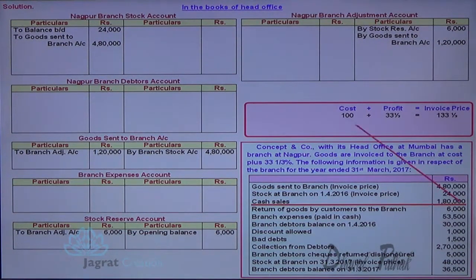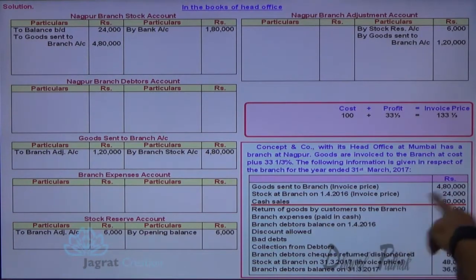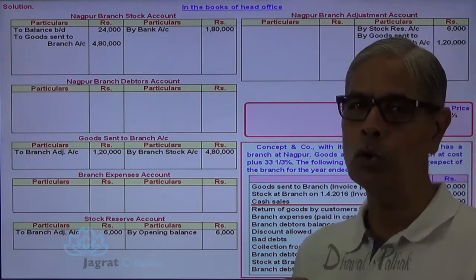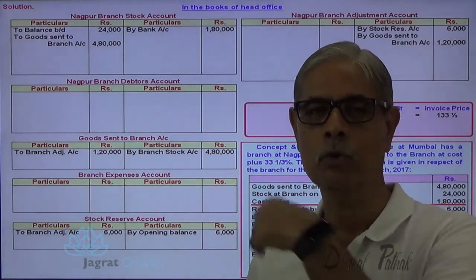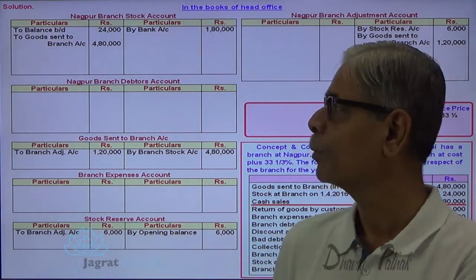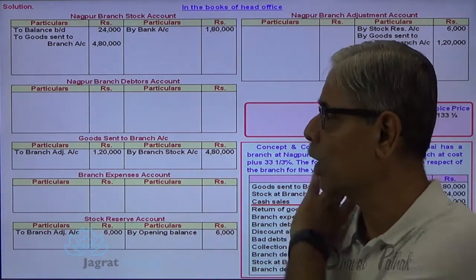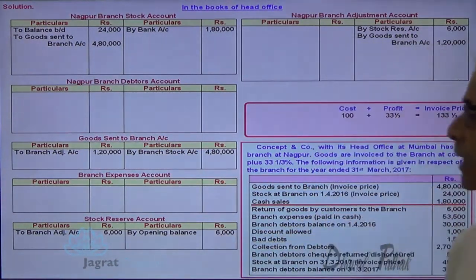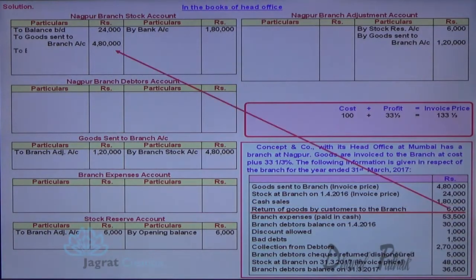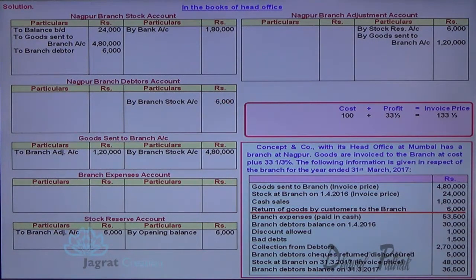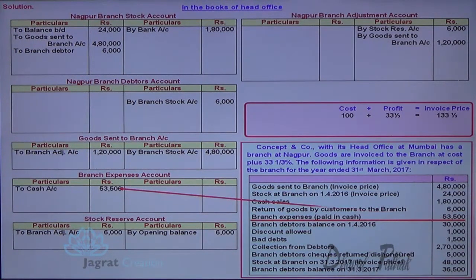For cash sales: cash account or bank account debit to branch stock account credit. For return of goods by customers to the branch, branch stock increases and the amount is not recoverable from debtors, so the entry is: branch stock account debit to debtors account credit. For expenses paid in cash: branch expense account debit to cash account credit.